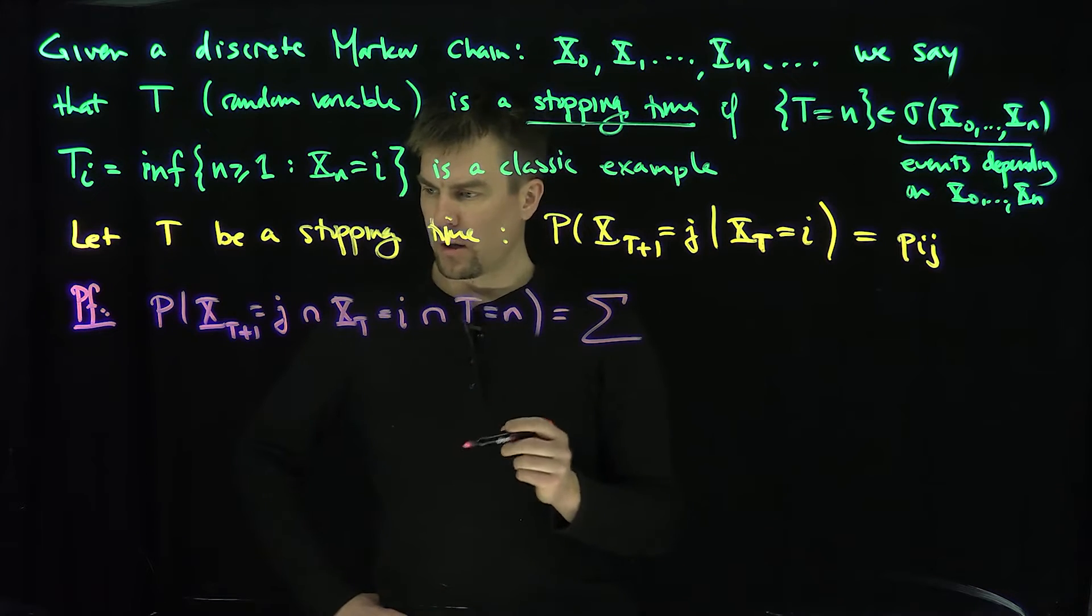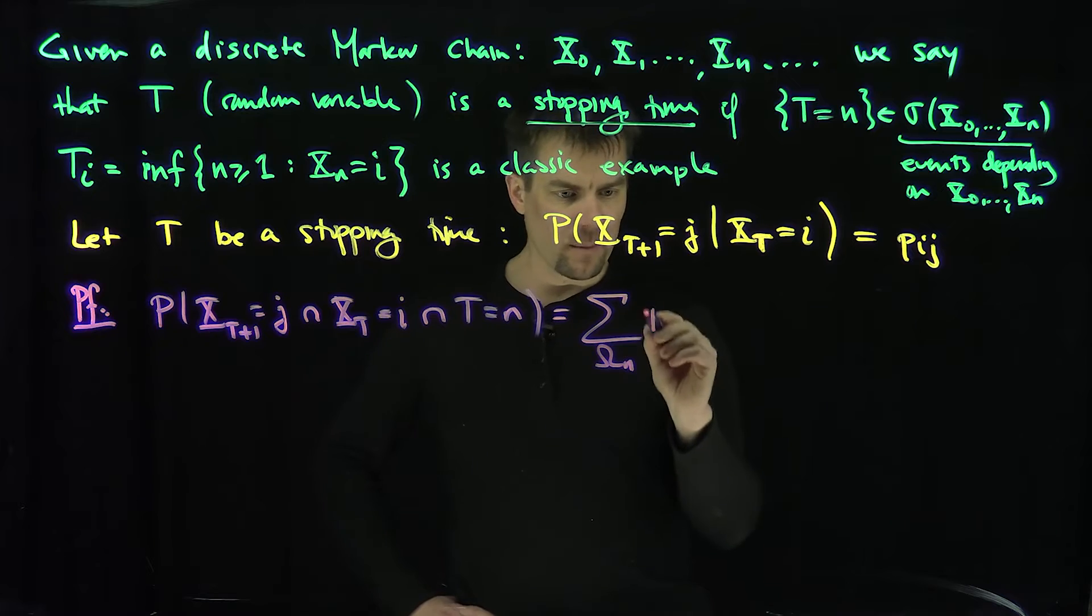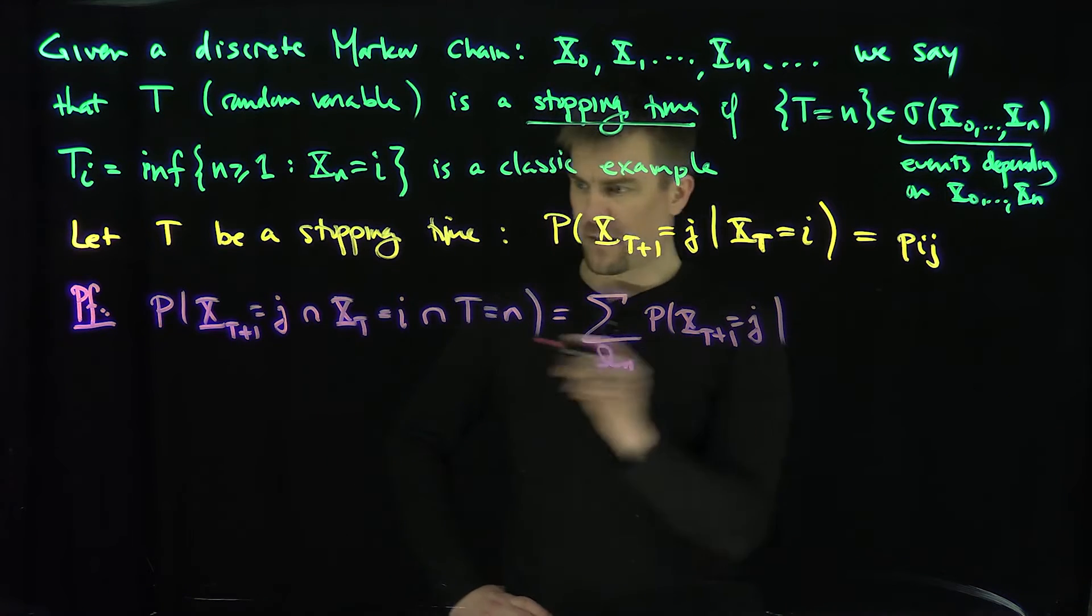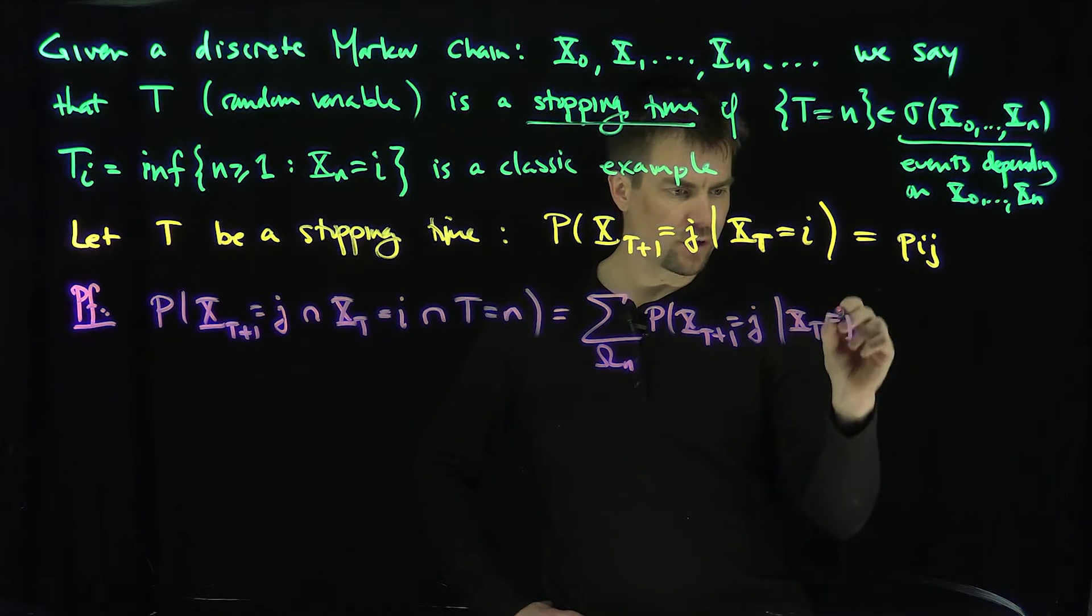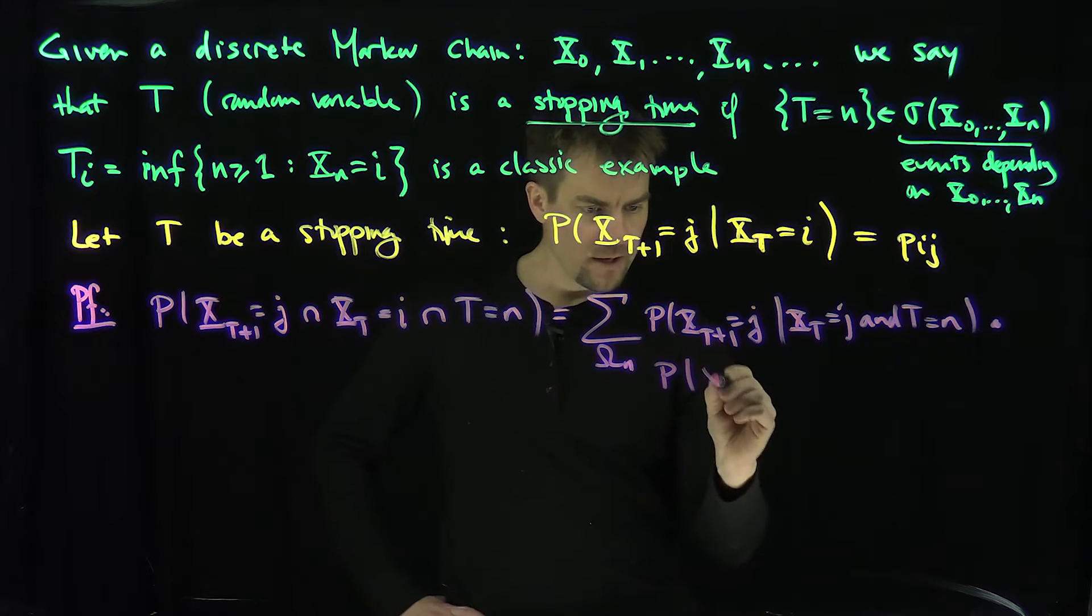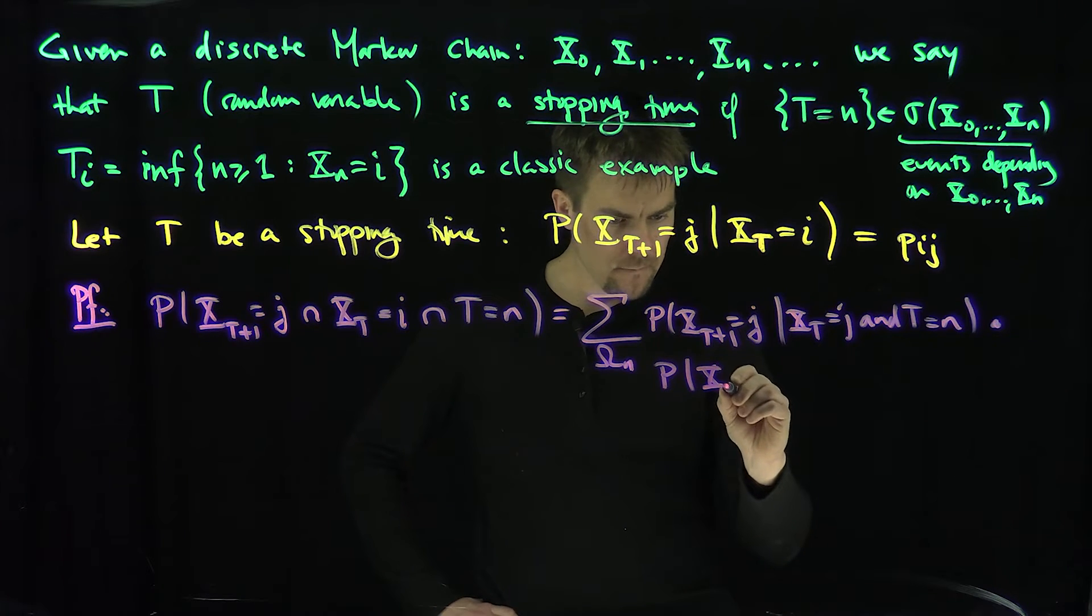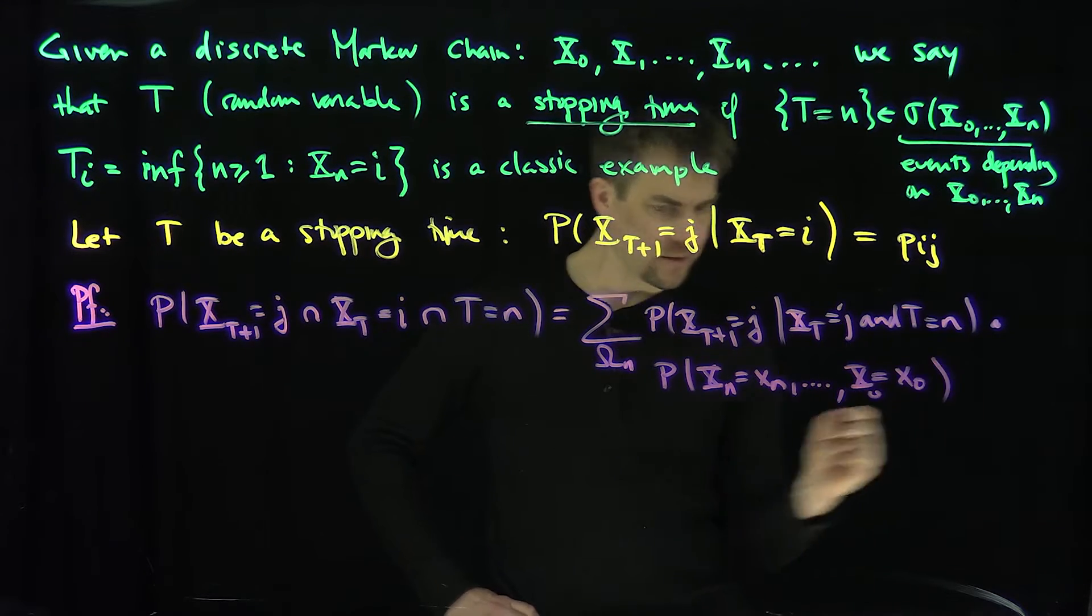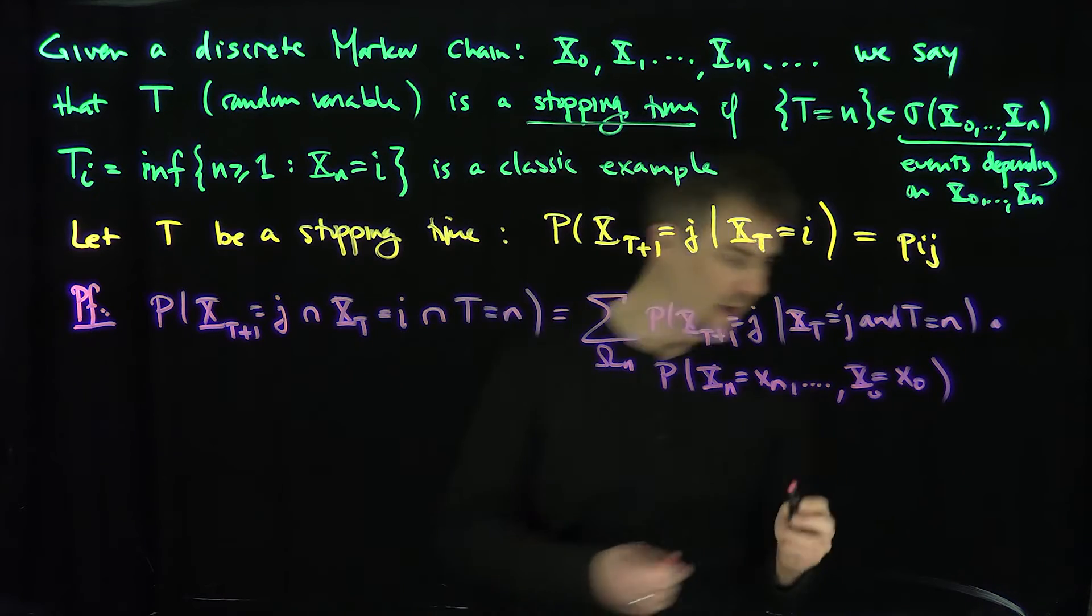The sum overall, I'm going to make some index set up over here. I'm going to make some set omega_n. I'll play with this omega_n as the sum over omega_n of the probability that x_t plus 1 is equal to j, given that these two things happen, given that x_t is equal to j and t is equal to n, times, these things have been multiplied by the probability that x_n is equal to little x_n, x_0 is equal to little x_0. And these, of course, these values, these points over here come from this set omega_n. And so what is omega_n over here? So omega_n is therefore what?